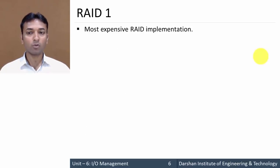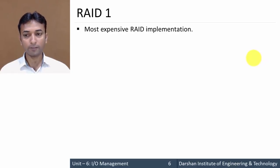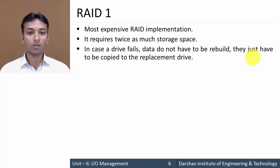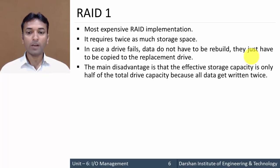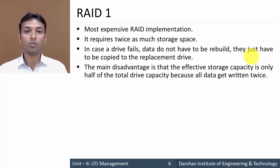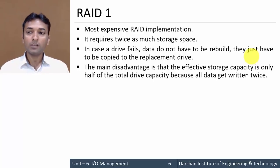RAID 1 is the most expensive RAID implementation because you require two disks to store the same data — it requires twice as much storage space. If you require 40 GB of space, you need 80 GB of hard disk. In case a drive fails, data does not have to be rebuilt; it just has to be copied to the replacement drive. The main disadvantage is that effective storage capacity is only half of the total drive capacity, since all data gets written twice.